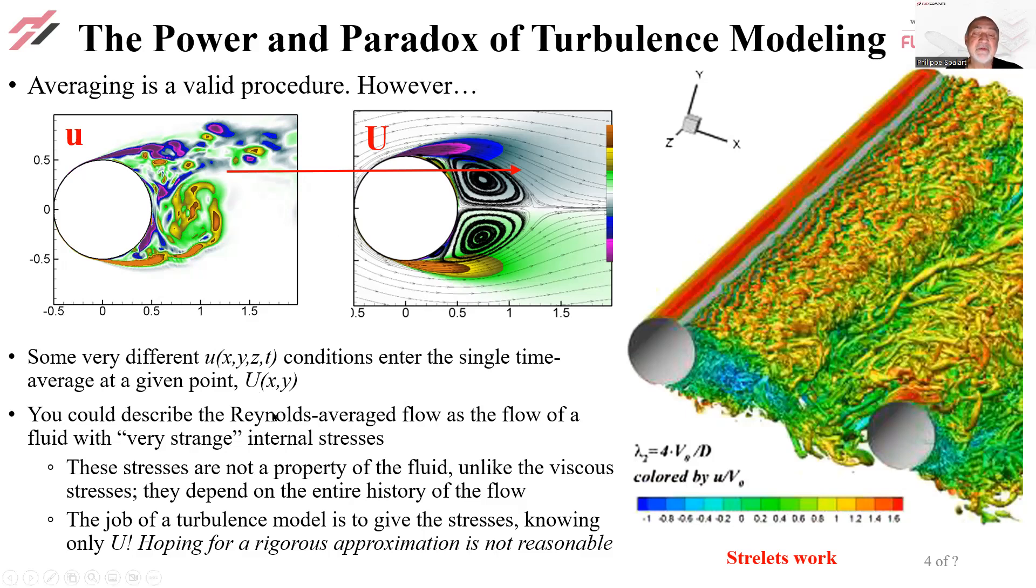One way is to describe the Reynolds-averaged flow as a flow of a fluid with some very strange internal stresses, worse than a non-Newtonian fluid, for instance. Now these stresses are not a property of the fluid. Unlike the viscous stresses, they depend on the entire history of the flow. In this case, you can tell that this flow is unsteady; there's shedding of vortices, and then also a lot of dependence on the third direction.